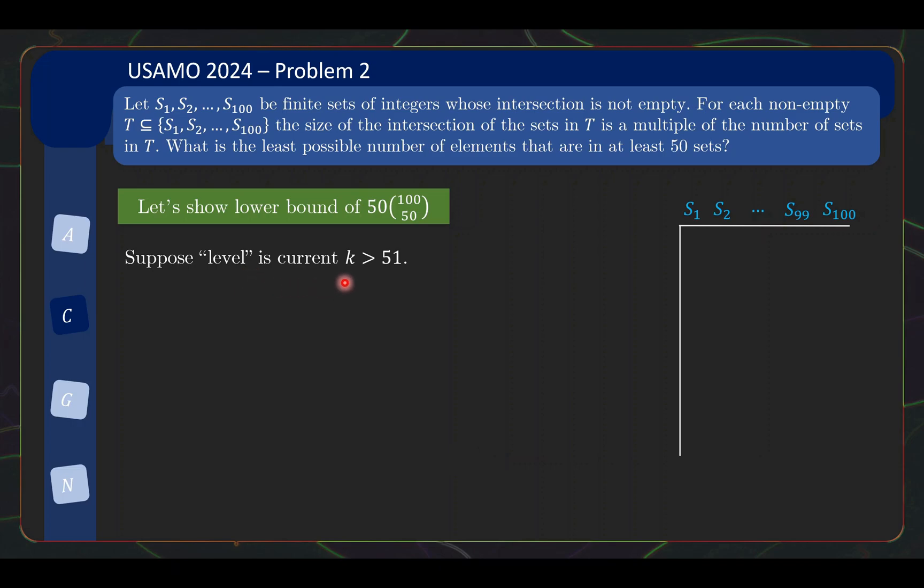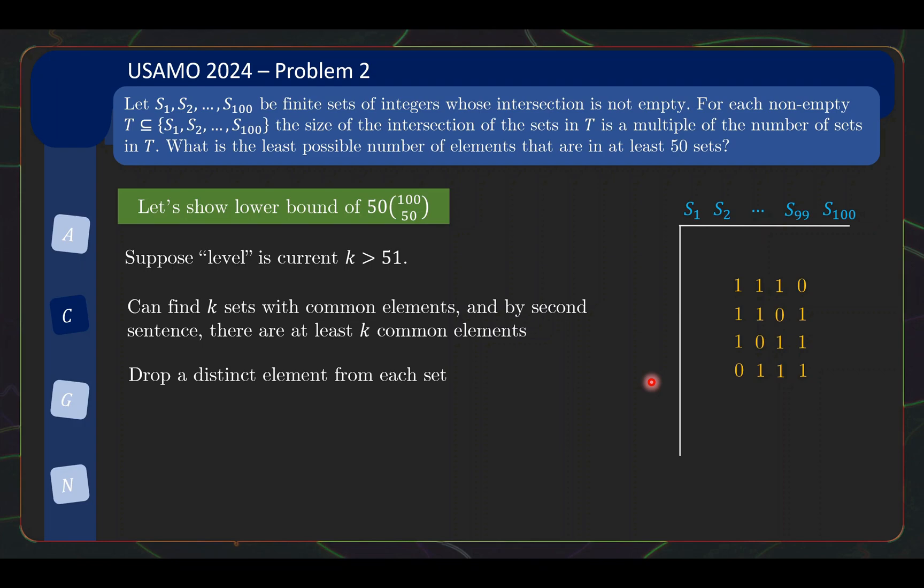So let us see what is this actual modification that we are making. So suppose the level currently is at k, this should read k bigger than or equal to 51, my apologies for the typo. Now what is the modification? Well, by definition of level, we can find k sets that have common elements. And by this multiple shenanigans, there needs to be at least k common elements. In fact, a multiple of k number of common elements. Now, for illustration purposes, I'm going to put this in a k by k matrix. But of course, the sets in the collection need not be consecutive and the elements also need not be consecutive. Okay, why is this modification that I'm talking about? What we will do is we will drop a distinct element from each set. So for the first set, we drop some element. For the second set, we drop a different element and so on. You can visualize this by seeing that we put a zero across one of the diagonals of the matrix.